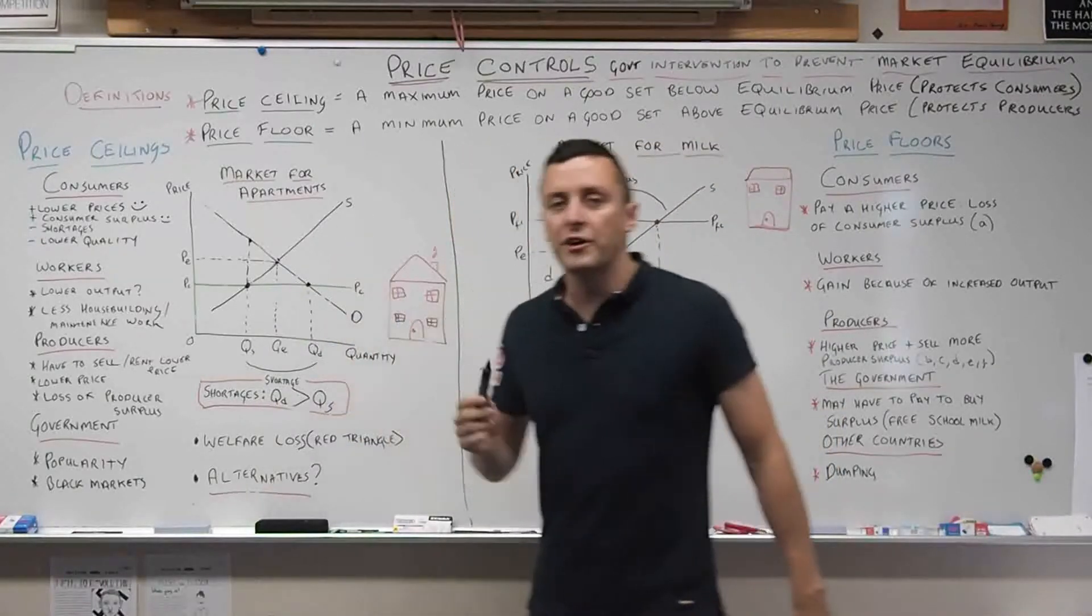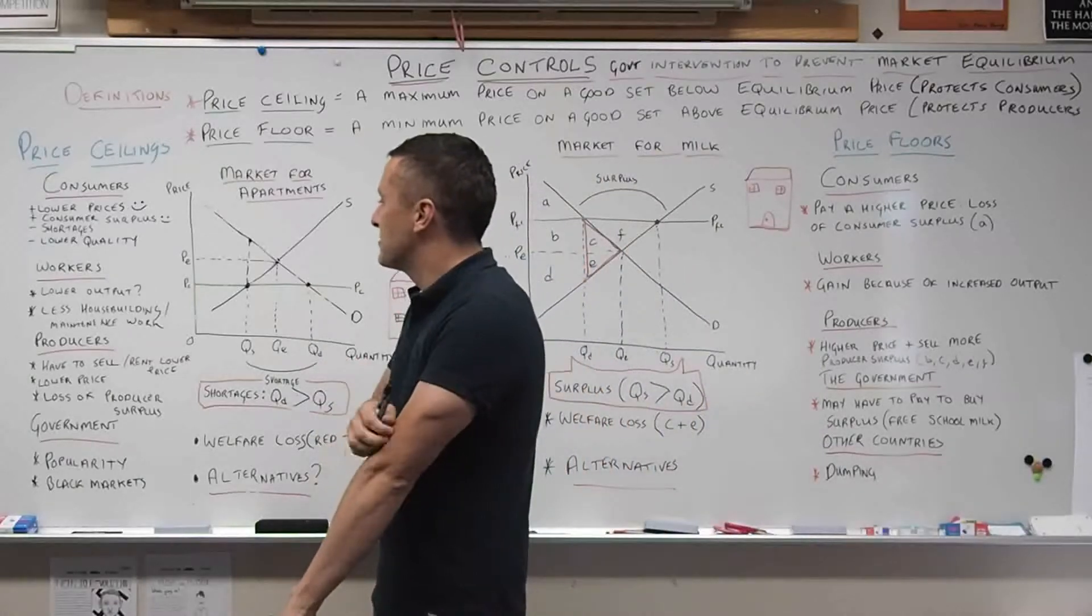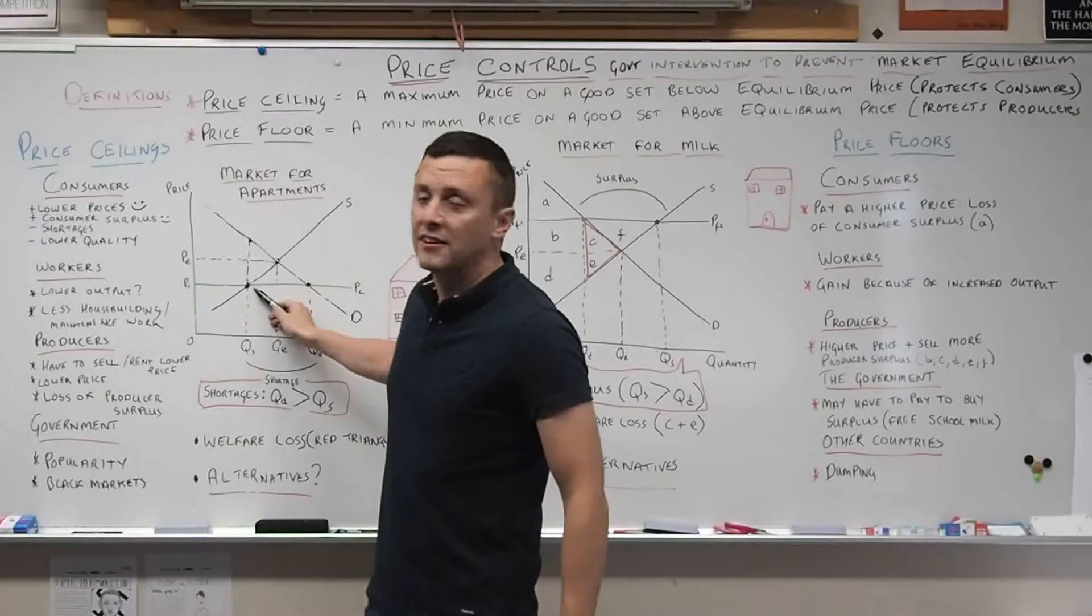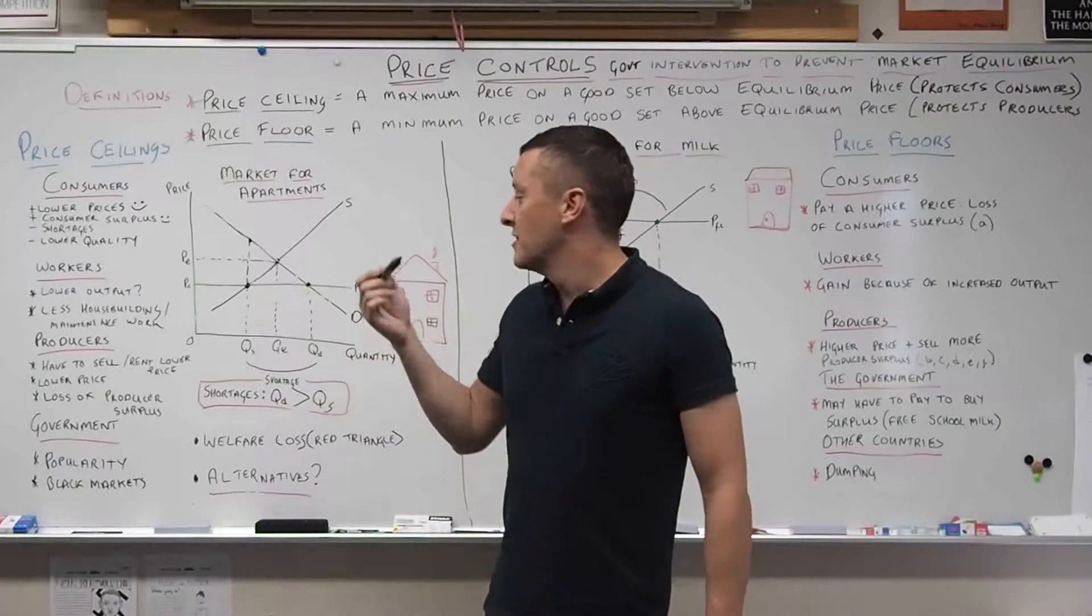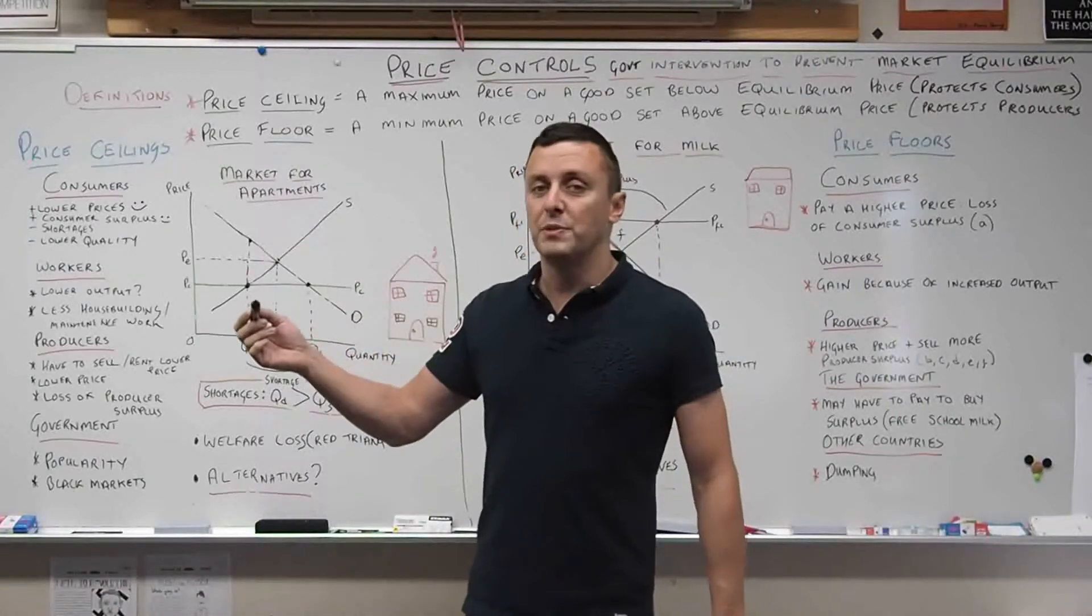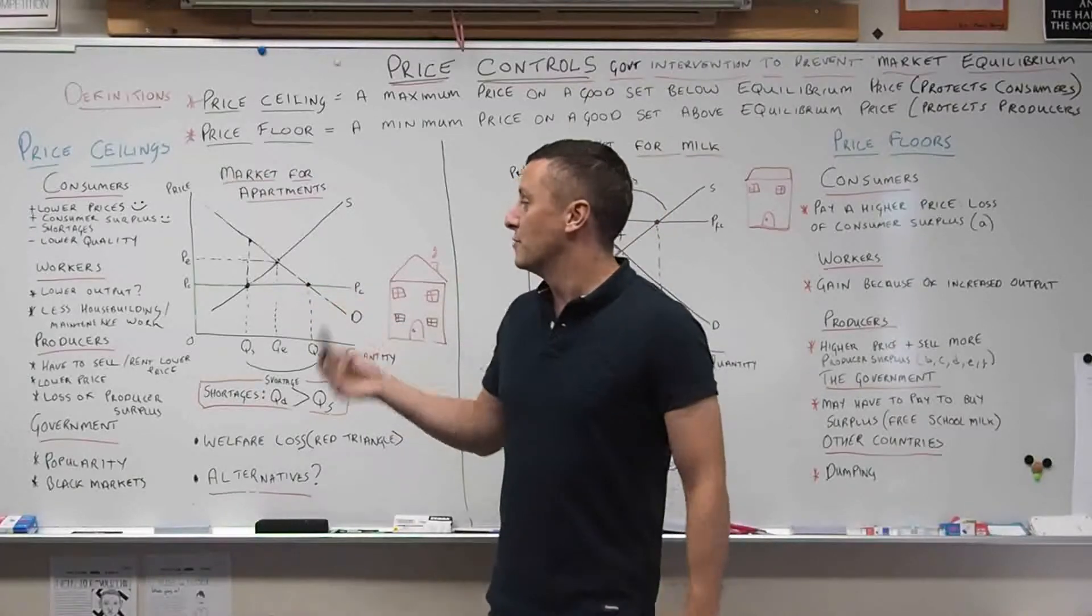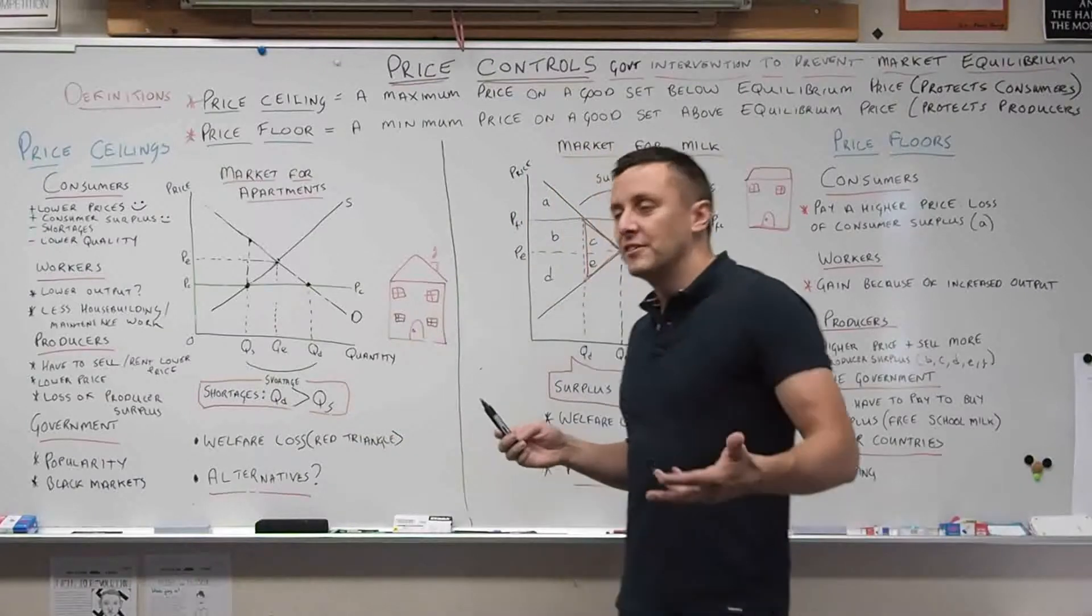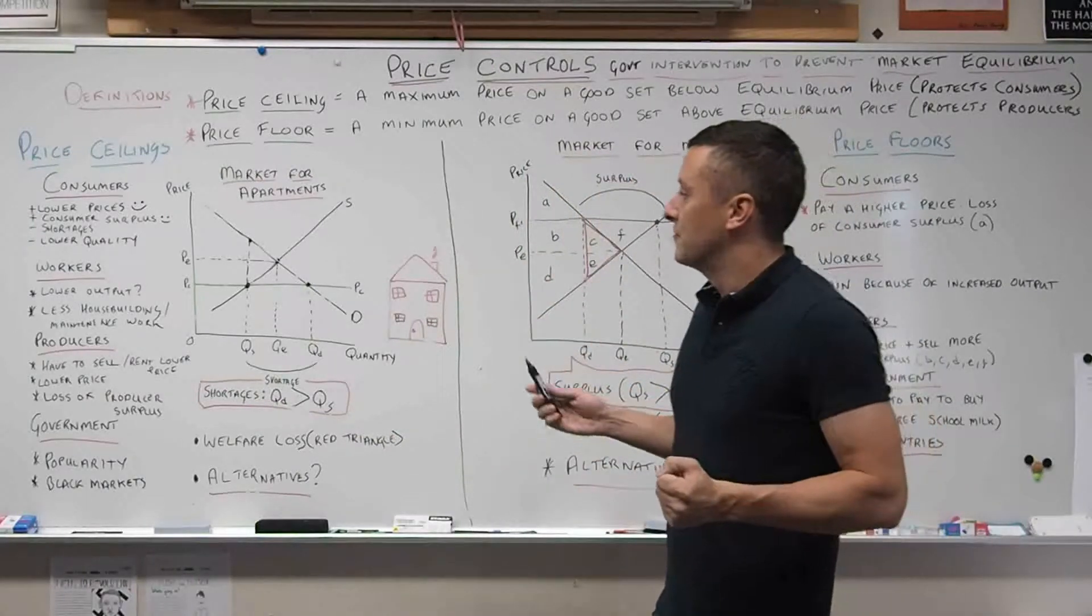Next we'll think about the workers in this situation. Again, there'll be less quantity supplied, so there'll be perhaps lower output. That means there'll be less buildings being built and less apartments being rented out. So there'll be less need for maintenance work, building work, and upgrading apartments.